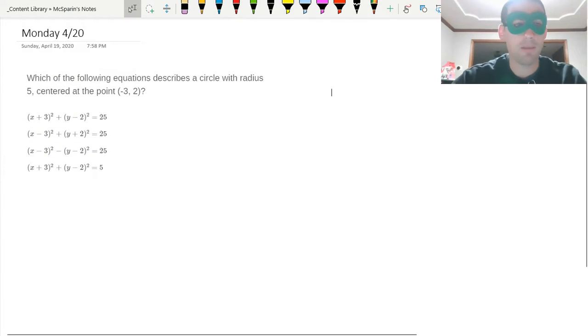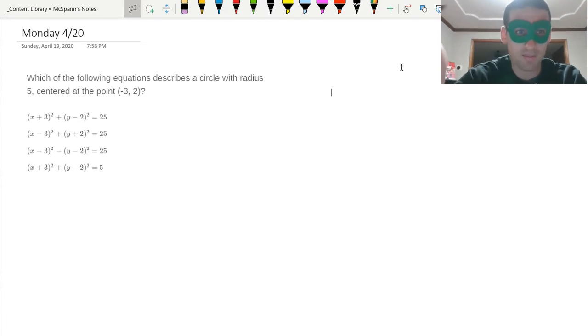Alright, hello people, happy Monday. Let's go over this circles problem real quick, then I'll give you guys another homework problem to try. This says which of the following equations describes a circle with a radius 5 centered at point negative 3, 2.